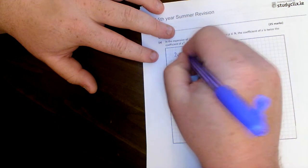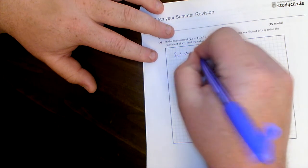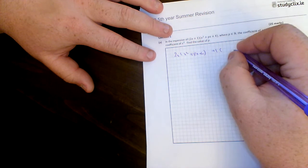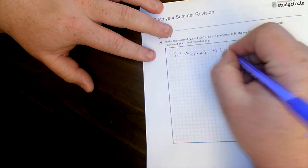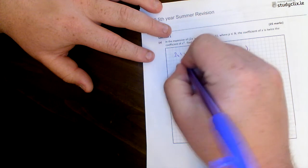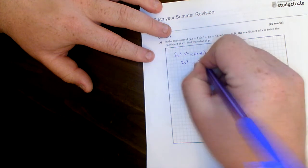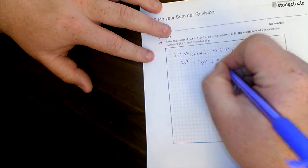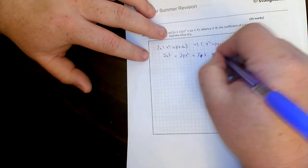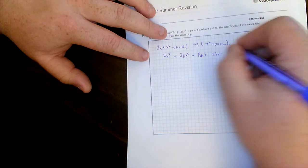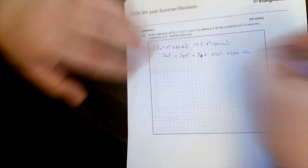That's 2x bracket x squared plus px plus 4. Plus 1 bracket x squared plus px plus 4. So that's 2x cubed, 2px squared, 8x. Sorry, just 8x. 2 by 4x is just an 8x. 1 by x squared is plus 1x squared. 1 by px is just plus 1px. And then finally 1 by 4 is just a plus 4.